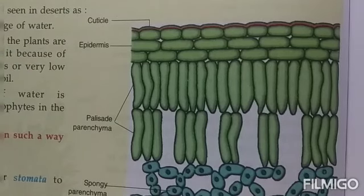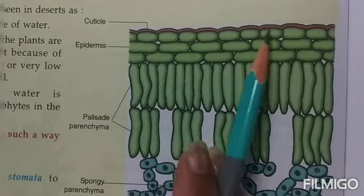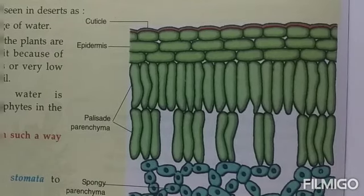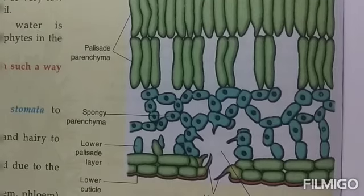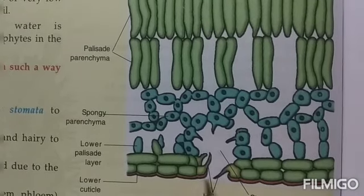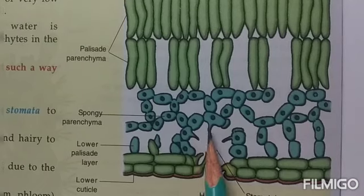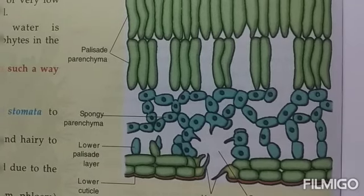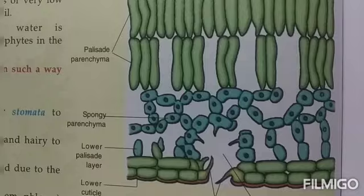Here is a diagram from your book showing the cuticle covering over the upper epidermis and the lower one. The cuticle is present on both the lower and upper sides. The sunken stomata are there — the stomatal cavity contains sunken stomata which reduce the loss of water by transpiration.